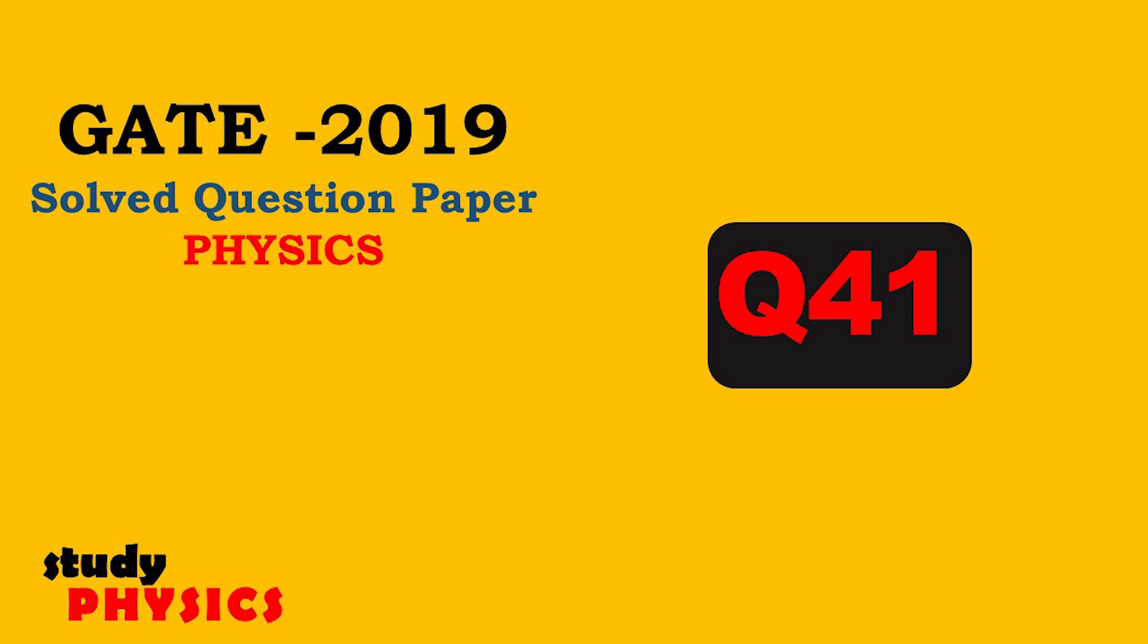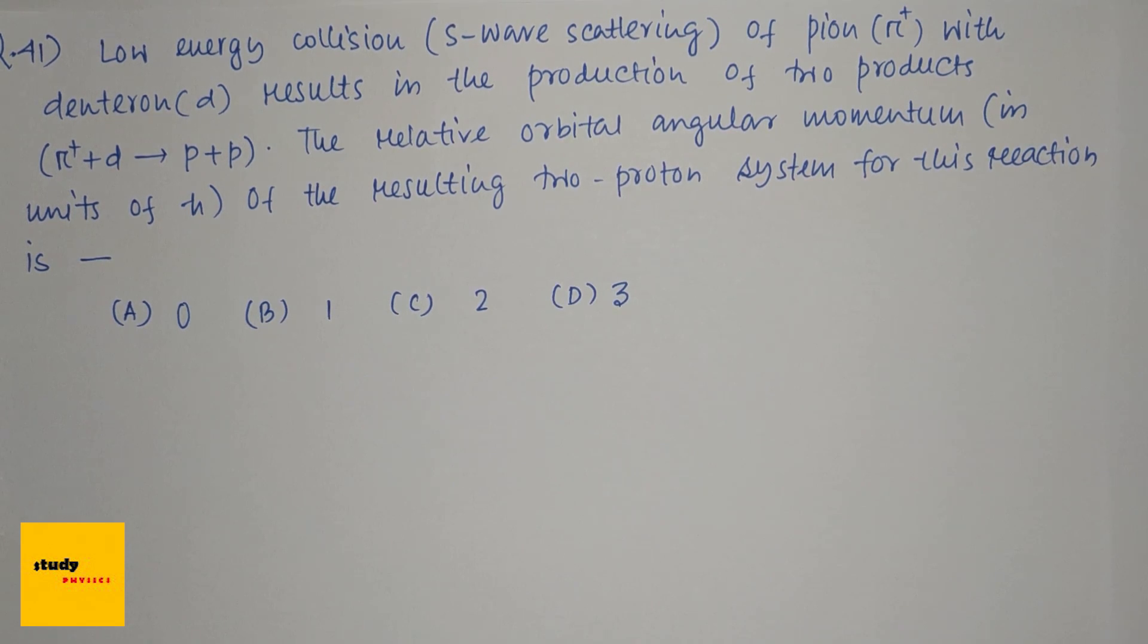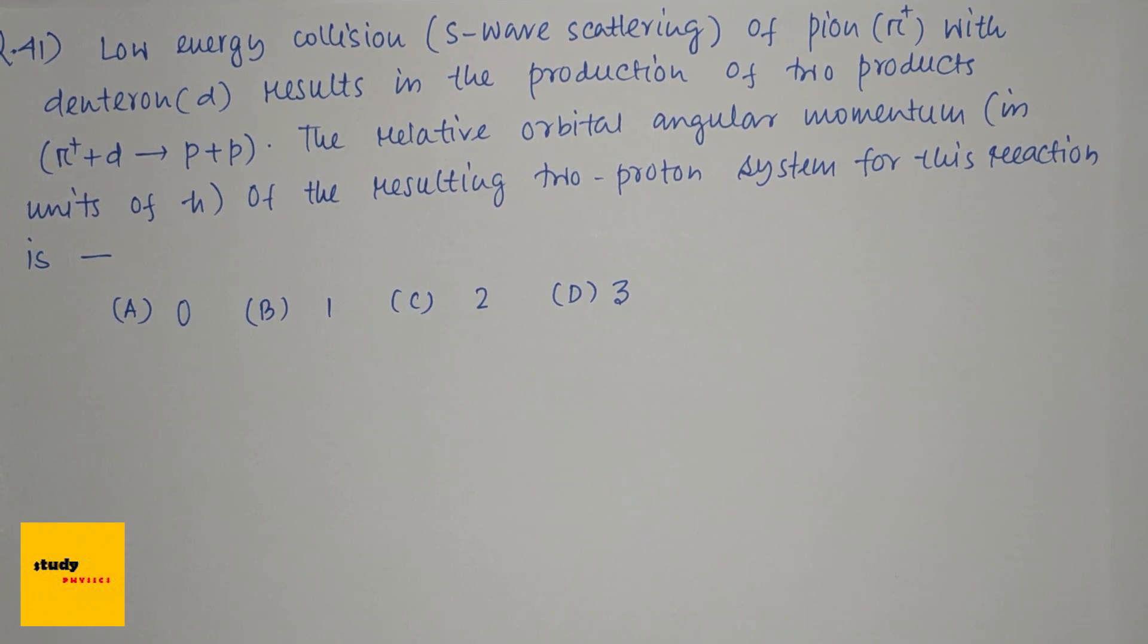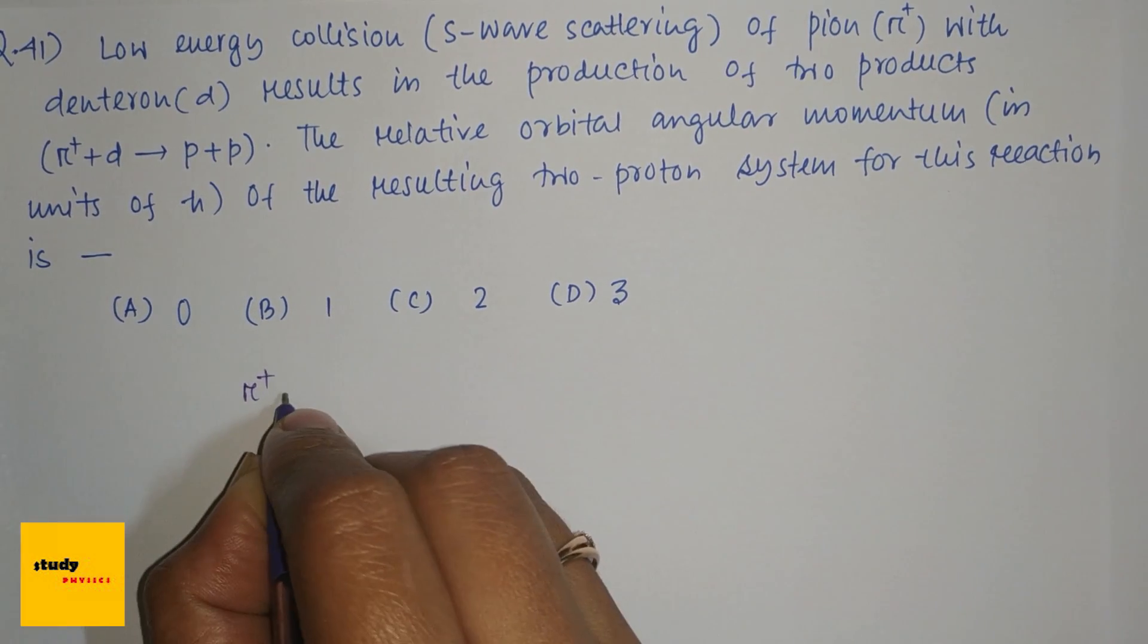Hi everyone, welcome to Study Physics. Here's question number 41: Low energy collision (S-wave scattering) of pion with deuteron results in the production of two products: π⁺ + d → p + p. The relative orbital angular momentum in units of ℏ of the resulting two-proton system for this reaction is—